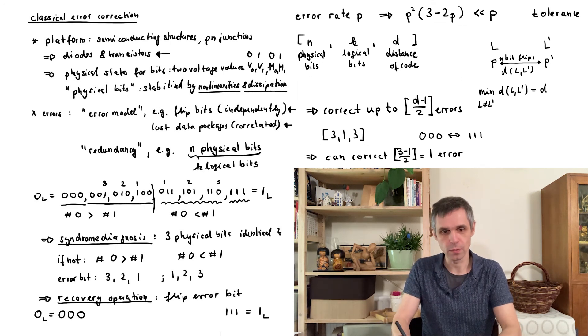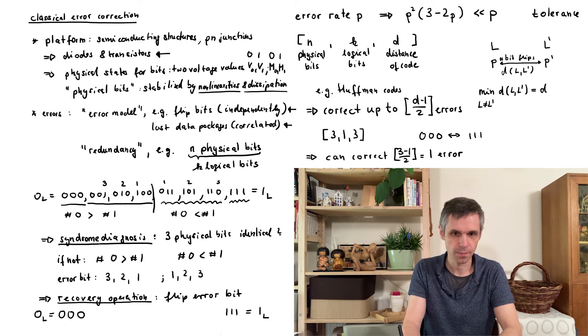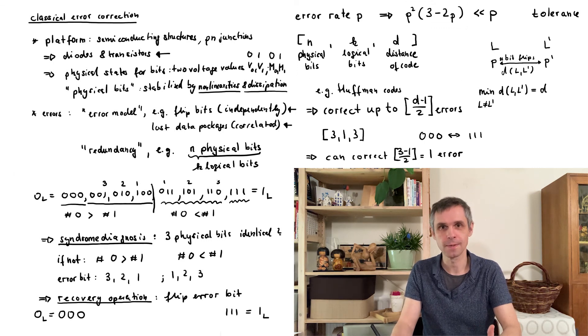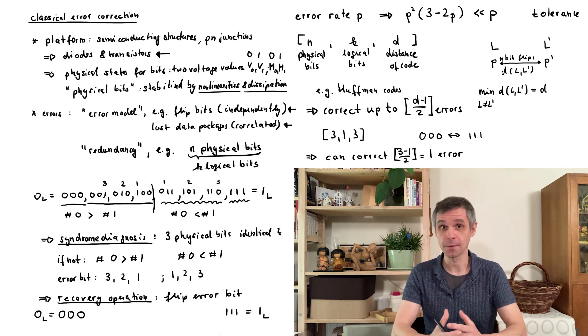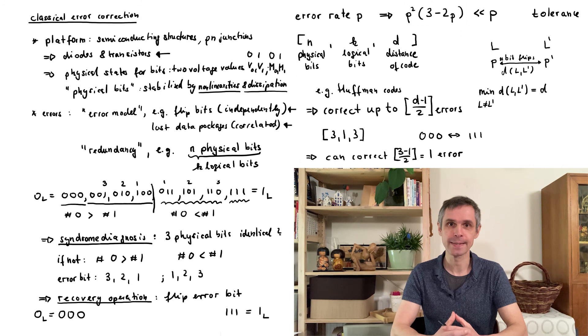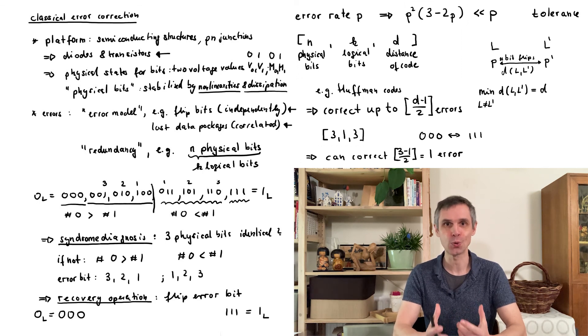But the general case includes very efficient strategies such as the so-called Huffman codes. And as you can imagine their theory involves for instance the Shannon entropy. But we do not need to go into this in any further detail. What we are really interested in is the quantum case, and for this we have provided enough context and fixed a whole range of useful notions. So we move on to quantum error correction.